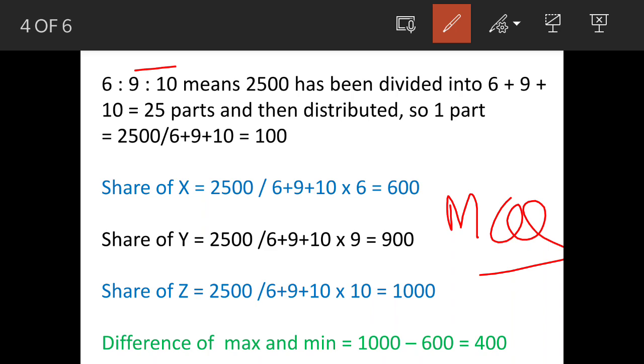Now, when we say money has been divided in the ratio 6 : 9 : 10, that means it's been divided into 6 + 9 + 10 = 25 parts. One part will be 2,500 divided by the sum of ratios, which equals 100.